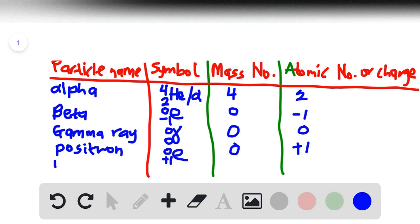And then for neutron, we've been given 1n/0, which has the mass number of 1 and atomic number of 0. So here becomes 1 and then here becomes 0.